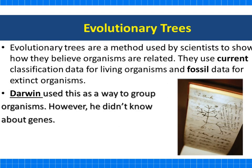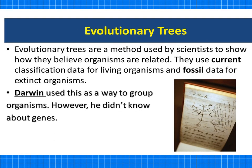Scientists use evolutionary trees to show how they believe organisms are related. They use current classification data for living organisms, but also fossil data for extinct organisms, to show how certain species may have evolved. Darwin used this as a way to group organisms; however, at that time he didn't know about genes and couldn't make the connections we can today with our knowledge of DNA.